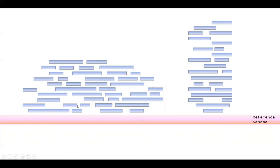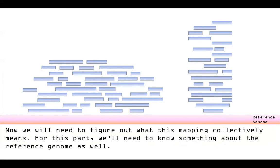These are very short fragments, so we use overlapping ends to give us an idea of how to put them together. Collectively, we need to figure out what this means. In order to get a lot of information out of this, once we've mapped these back, it's still a little bit vague what's happening. We need more information about the reference genome.